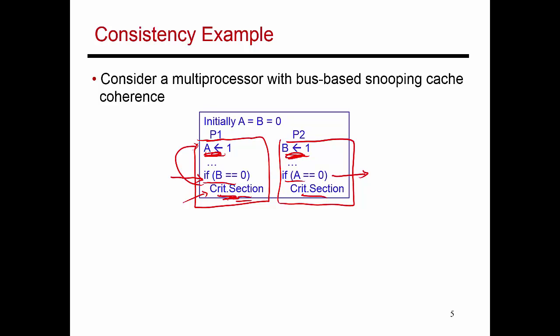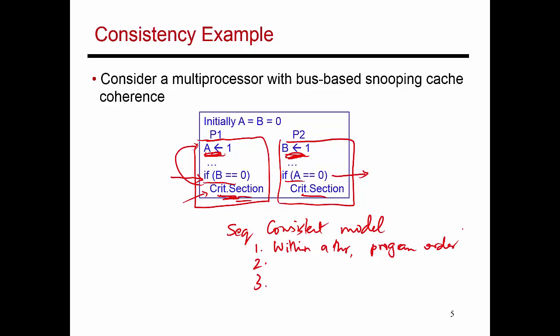When you looked at this program and said it should behave correctly, you were making a few natural and intuitive assumptions. Those assumptions are referred to as the sequentially consistent model. They break down into three sub-conditions. The first is program order: within a thread, you assume the first instruction executes first, then the second, then the third, and so on.